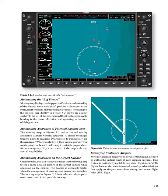Maintaining the big picture: moving map displays can help you verify a basic understanding of the planned route and aircraft position with respect to the route, nearby terrain, and upcoming waypoints. For example, the moving map display in Figure 5-2 shows the aircraft slightly to the left of the program flight route, presumably heading in the correct direction, and operating to the west of rising terrain. Maintaining awareness of potential landing sites: the moving map makes several nearby alternative airports visually apparent. A classic technique used by pilots is to periodically ask, where would I go if I lost engine power? The moving map can be used in this way to maintain preparedness for an emergency, if you are aware of the map scale and aircraft capabilities.